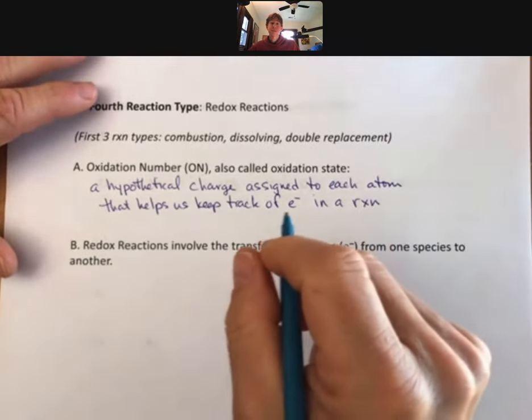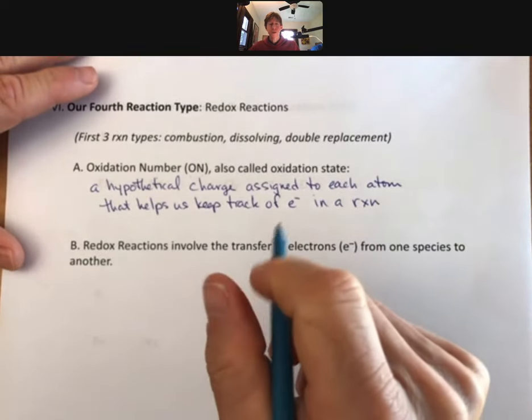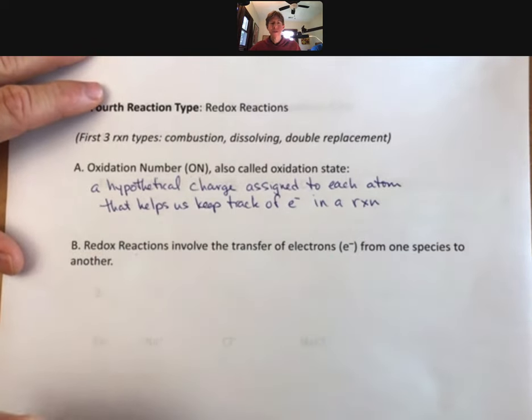And this is a completely general process for doing it, whether it's a redox reaction or not, because redox reactions involve the transfer of electrons from one species to another. And we're going to be interested in keeping track of those electrons.